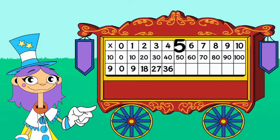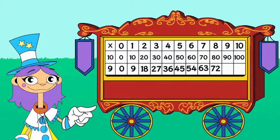9 x 5 is 45. 9 x 6 is 54. 9 x 7 is 63. 9 x 8 is 72. 9 x 9 is 81. 9 x 10 is 90.